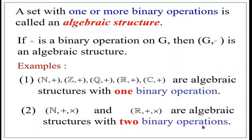We can also have algebraic structures with three, four, five or more operations. For example, the set of real numbers R has three simple operations: addition, multiplication, and subtraction.